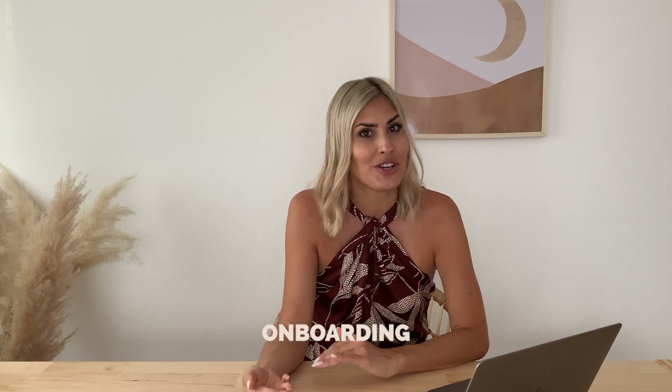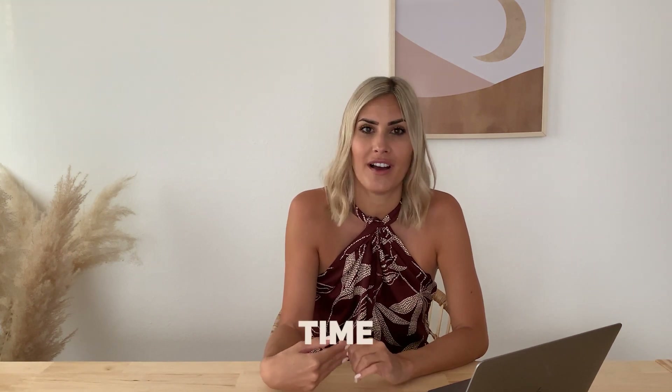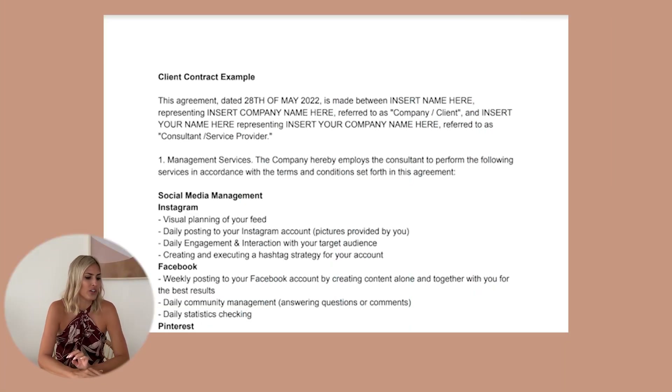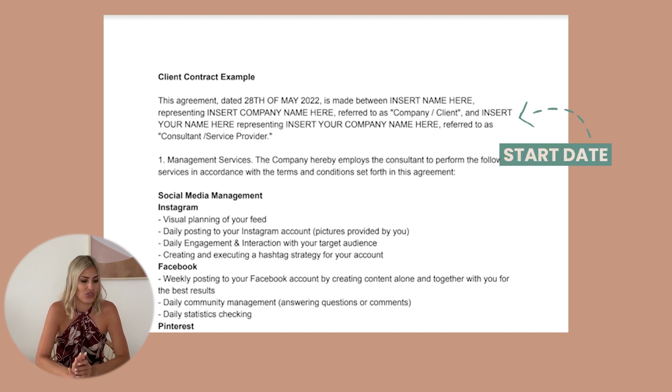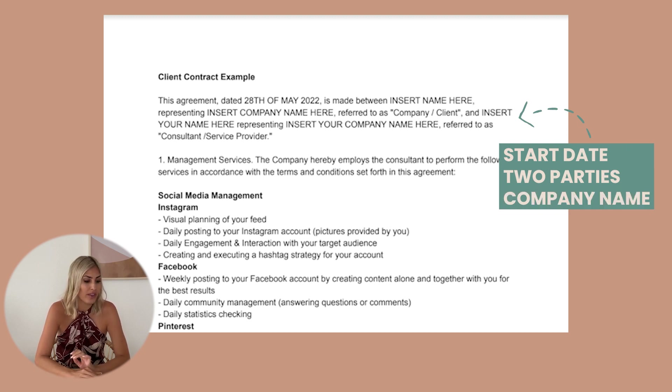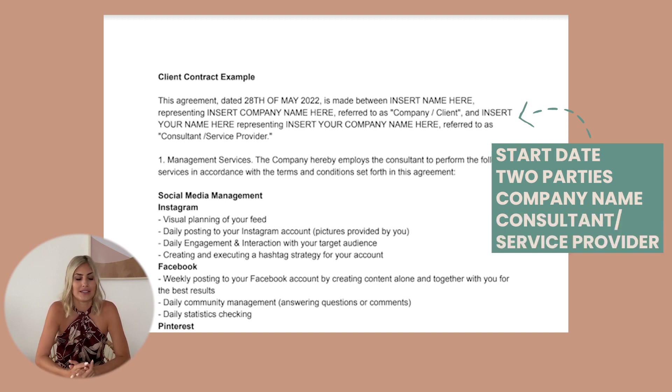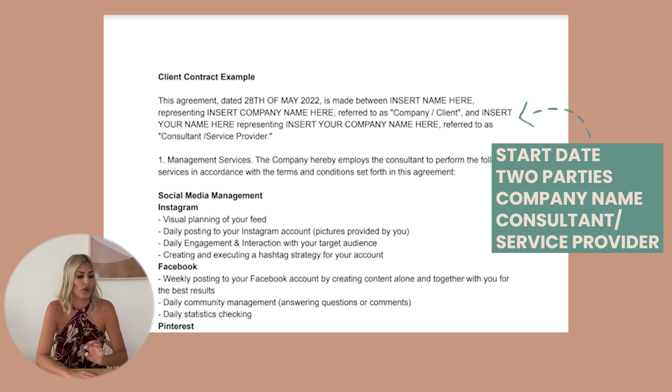We're now here in my contract and I'm sharing it as I have it as a Google Doc so I can constantly change things, and then I would send it as a PDF to my clients. First of all, the obvious one: you're going to write down when the contract is going to start and who are the two parties involved. You can name the company and client you're working with. I always call myself in the contract 'consultant' or 'service provider.' You can also call yourself 'social media manager' and use that word moving forward in the contract.